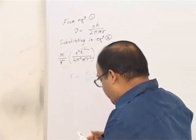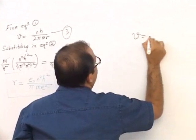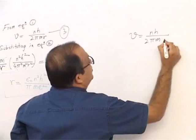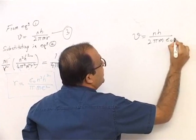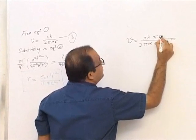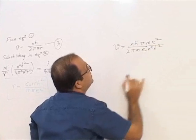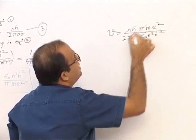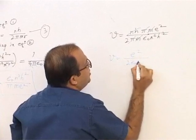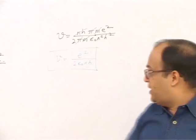Now substituting the radius back into equation 1, we get velocity v = nh/2πmr = e²/2ε₀nh. After cancelling nh, π, and m, we obtain the equation for velocity: v = e²/2ε₀nh.